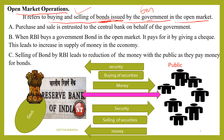The purchase and sale is conducted by the central bank on behalf of the government. Government bonds purchase and sale is done by the central bank on behalf of the government.